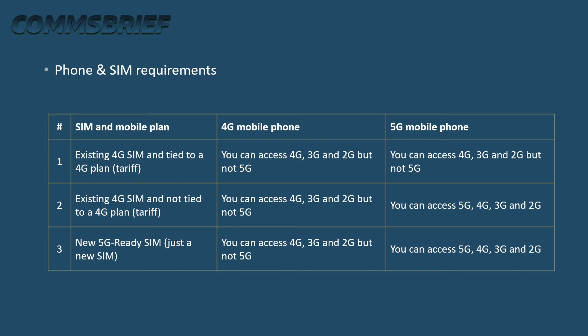Looking at the table on screen: in the first scenario, if you have a 4G SIM and are tied to a 4G tariff, you may only be able to access 4G, 3G, and 2G services but not 5G — regardless of whether you have a 4G or 5G phone. In the second scenario, if you have a 4G SIM but are not tied to a 4G tariff, you can access 5G if you have a 5G phone. Similarly, if you get a new 5G SIM, you can access 5G on a 5G phone, but on a 4G phone you can only access 4G LTE at best.